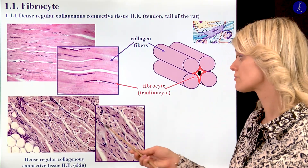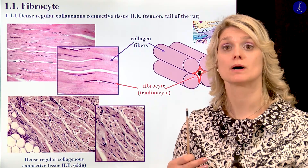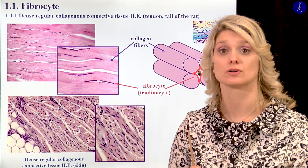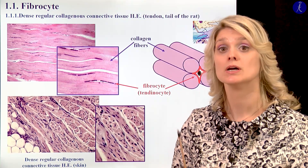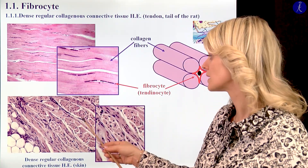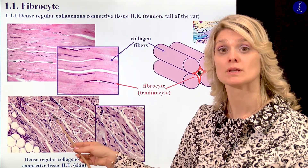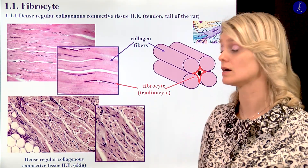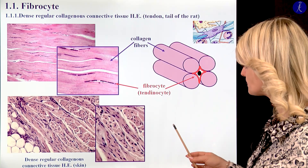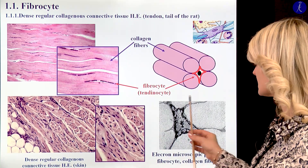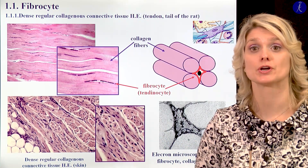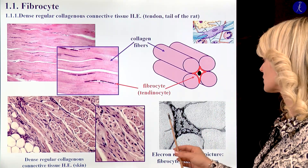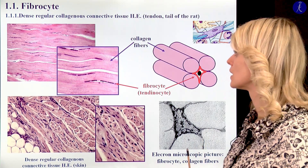What we can find in the deepest part of the palm — between the septa we have a lot of fat pads. And this is the electron microscopic picture of the cross-section of the fibrocyte and the collagen fibers around it.